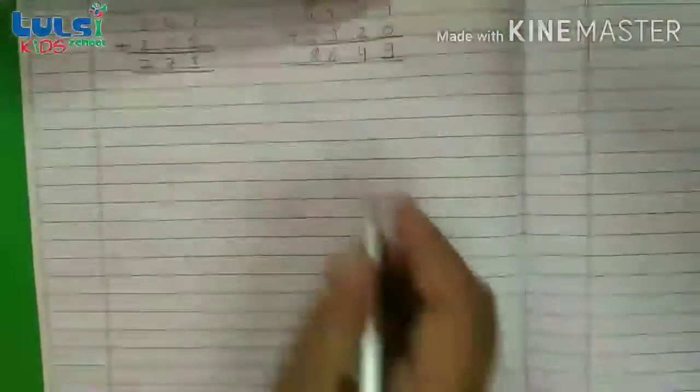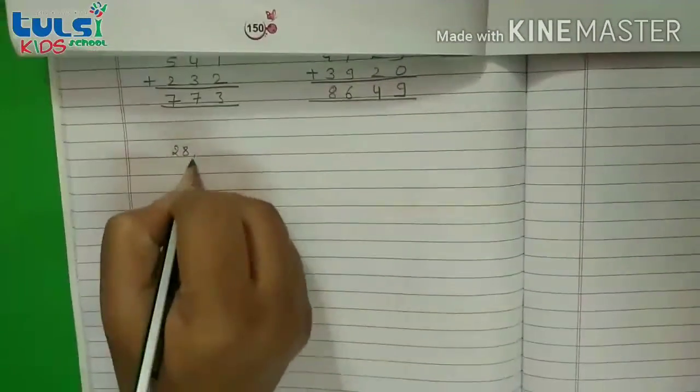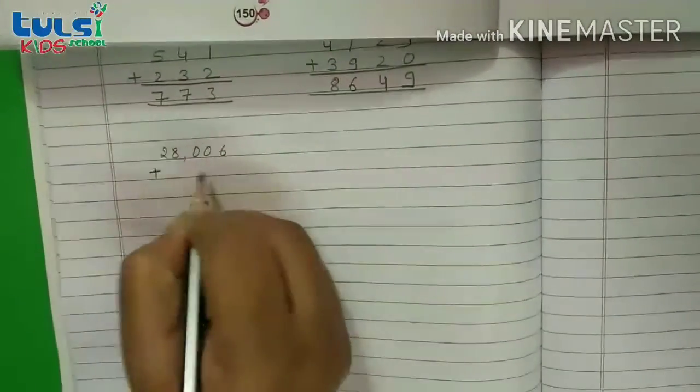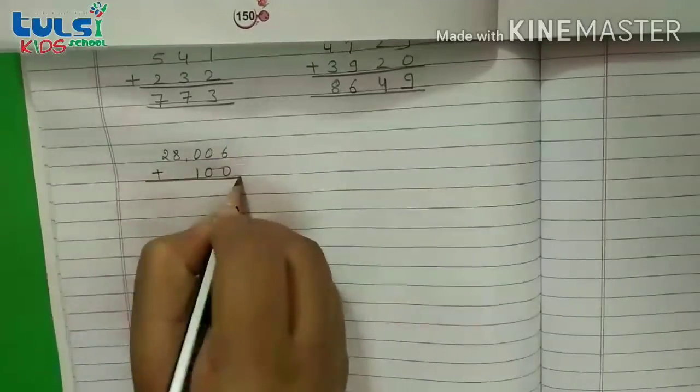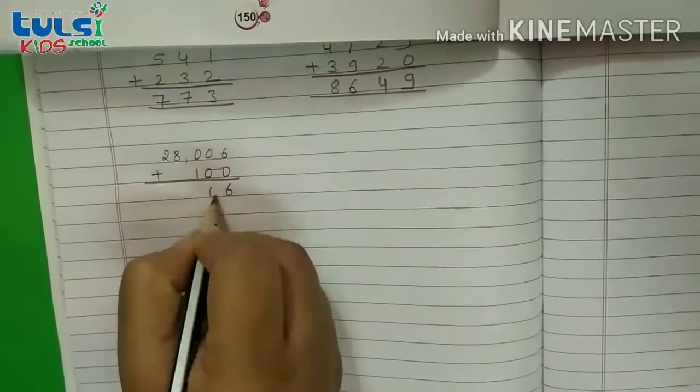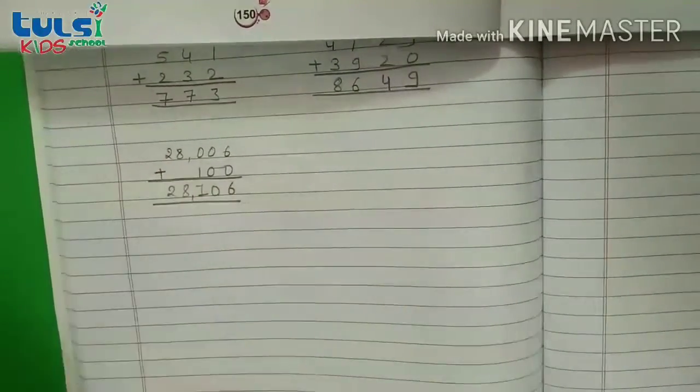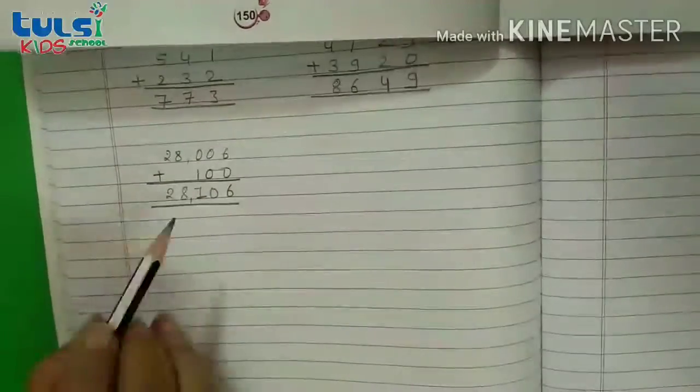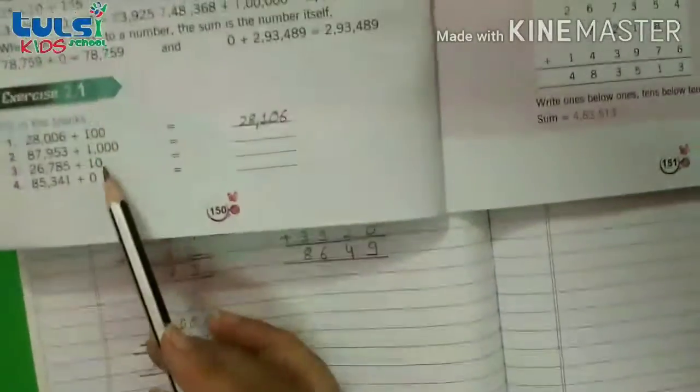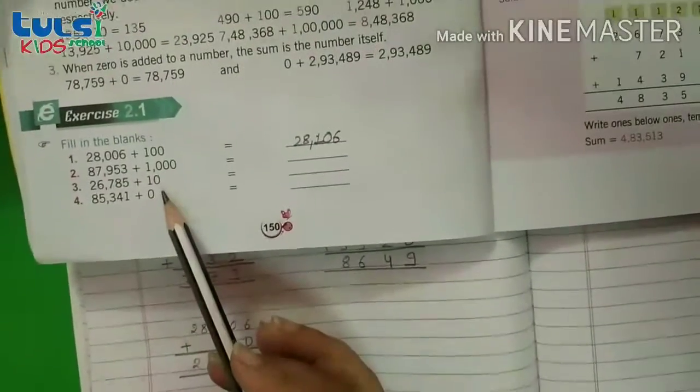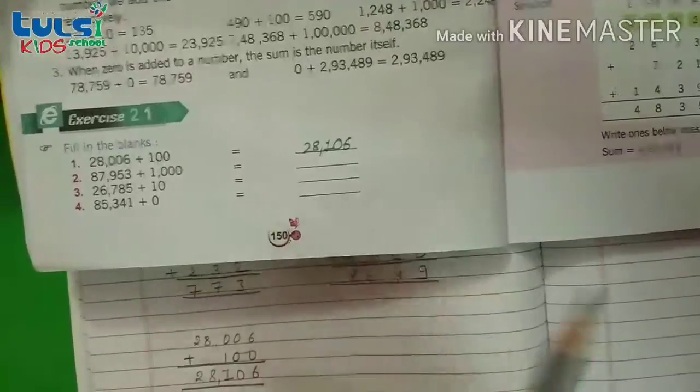Agar iska hum log solution karne jaate hai, toh is tarikhe se hooga. 28006 plus 100. So 6 plus 0 is 6, 0 plus 0 is 0, 1 plus 0 is 1, 8 ka 8 aur 2 ka 2 waapas. Toh is tarikhe se ye solution hoota hai. But agar without solution bhi aap log agar 0 wale digit ke saath agar addition karna chahe hai, toh without solution aap log kar saktay hai.